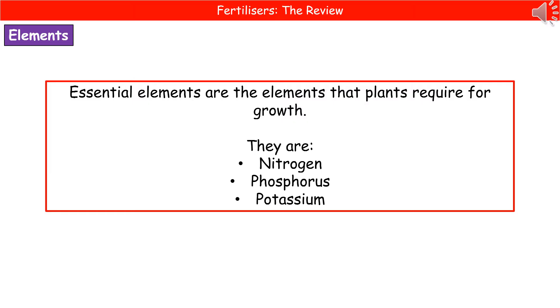You need to remember the names of three of these essential elements that plants need for their growth: nitrogen, phosphorus, and potassium.